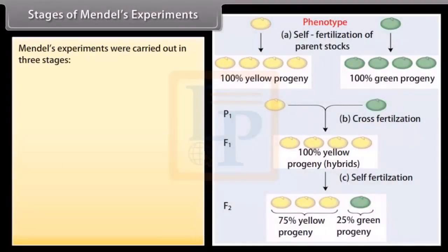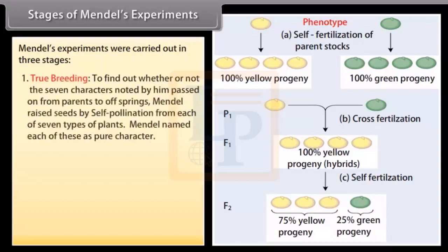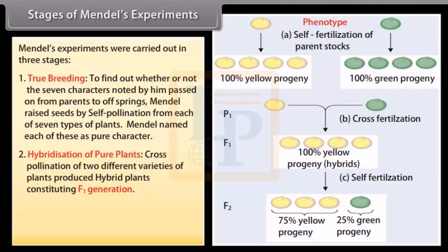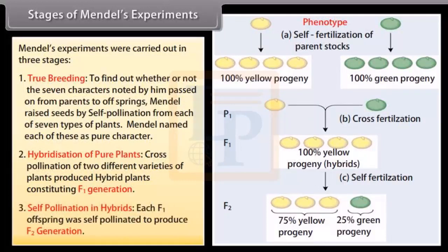Stages of Mendel's experiments. Mendel's experiments were carried out in three stages. True breeding: to find out whether or not the seven characters noted by him passed on from parents to offsprings, Mendel raised seeds by self-pollination from each of seven types of plants. Mendel named each of these as pure character. Hybridization of pure plants: cross-pollination of two different varieties of plants produced hybrid plants constituting F1 generation. Self-pollination in hybrids: each F1 offspring was self-pollinated to produce F2 generation.